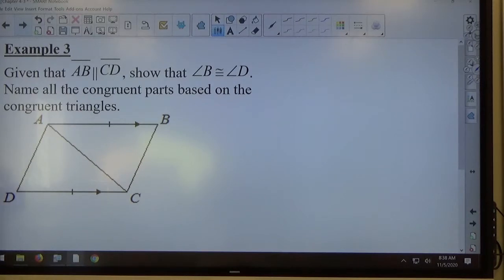So I'm going to mark up the figure first so we can list out what we know. Can we all see that AB is parallel to CD, that's given, and also marked on the figure AB is congruent to DC.